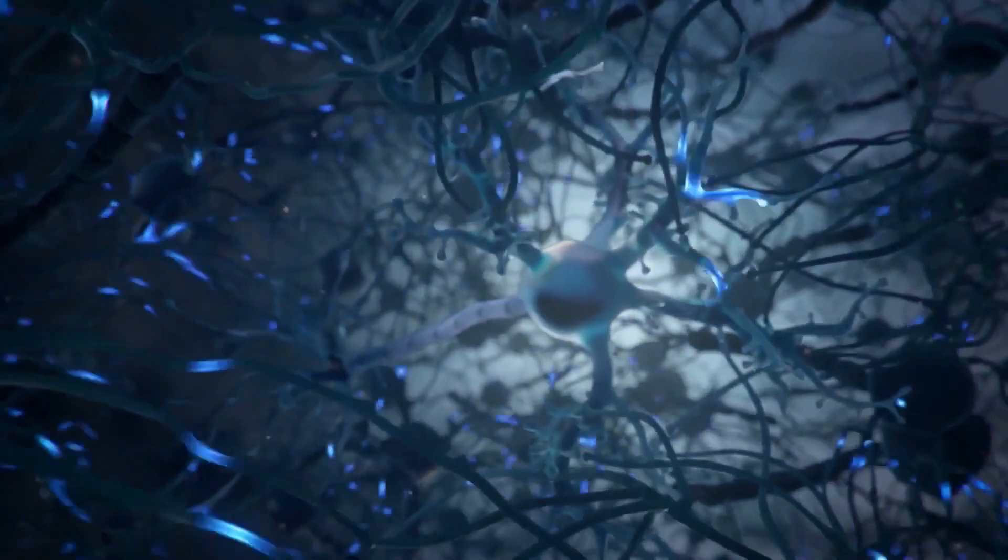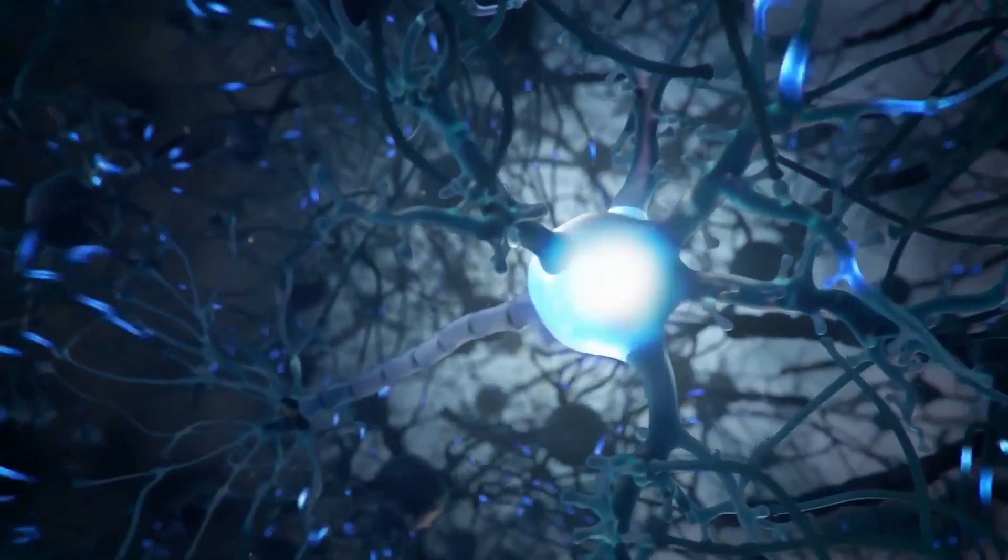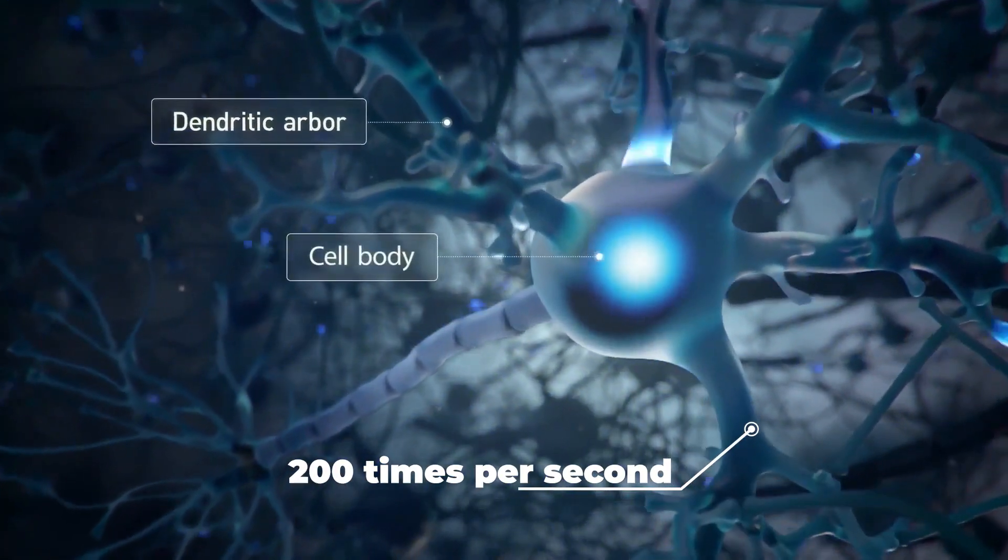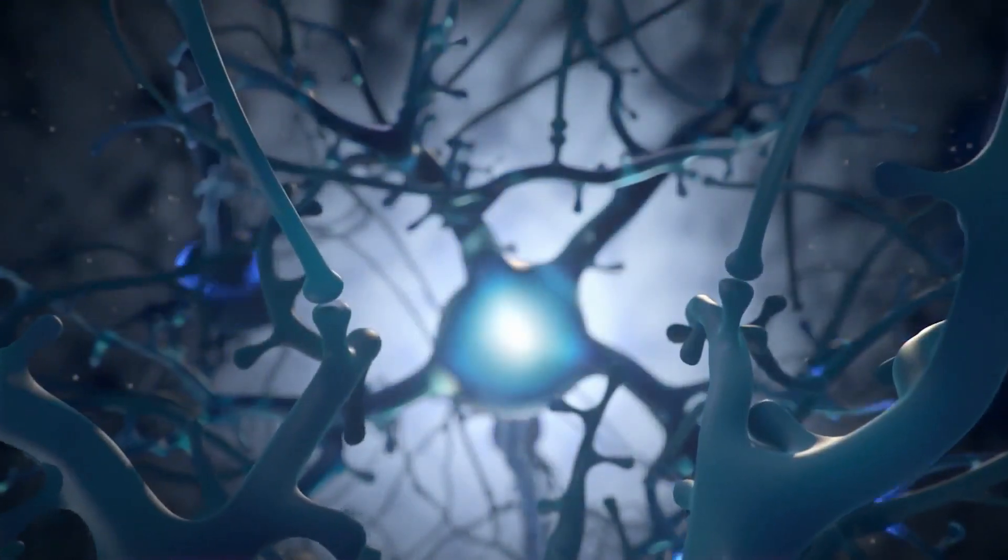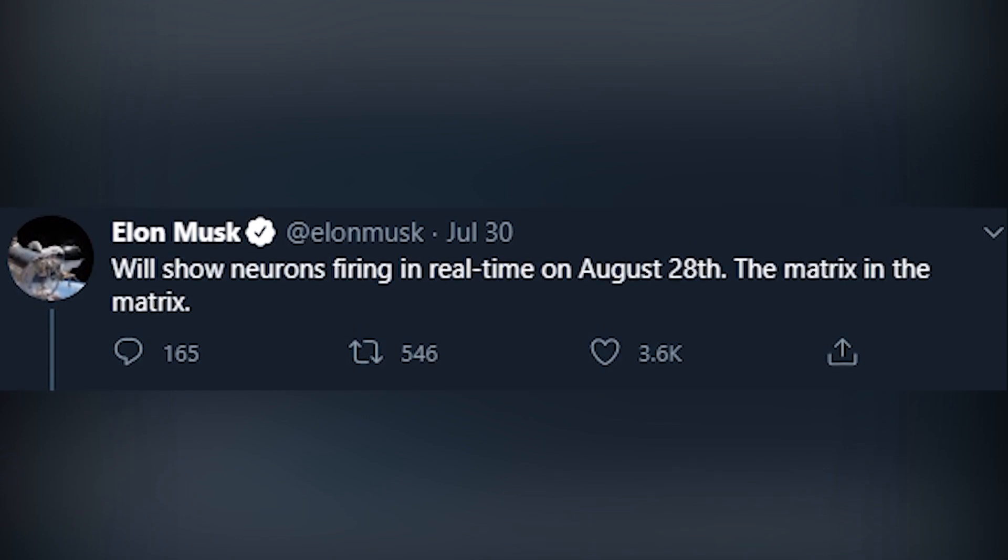While saying so, he talked about the frequency of neurons, which on average fire 200 times per second, and each neuron connects to around 1,000 other neurons. The same day, he also tweeted: will show neurons firing in real time on August 28th, the matrix in the matrix.